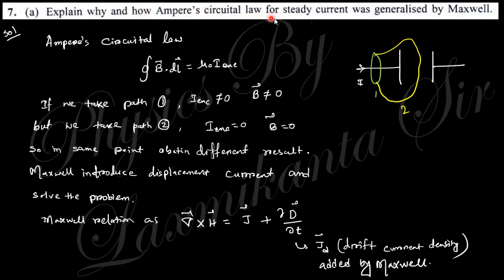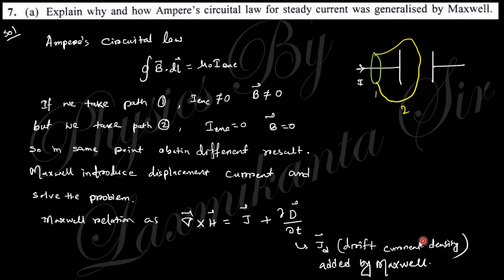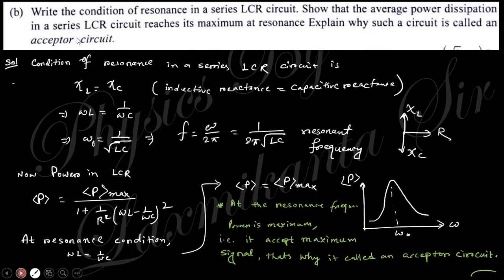Next question: explain why and how Ampere's circuital law for steady current was generalized by Maxwell. In Ampere's circuital law, the closed line integral ∮B·dl = μ₀·I_enclosed. Suppose there is a capacitor with current flowing. If you consider one loop you get a non-zero magnetic field, but if you consider another loop passing between the capacitor plates there is no current, so you get zero — a contradiction. Maxwell eliminated this error by introducing the displacement current density.